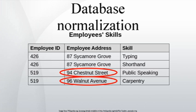Denormalization is also used to improve performance on smaller computers such as computerized cash registers and mobile devices, since these may use the data for lookup only, e.g. price lookups. Denormalization may also be used when no RDBMS exists for a platform or no changes are to be made to the data and a swift response is crucial. Denormalization is the opposite of normalization. In recognition that denormalization can be deliberate and useful, the non-first normal form is a definition of database designs which do not conform to first normal form, by allowing sets and sets of sets to be attribute domains.